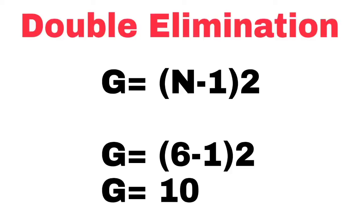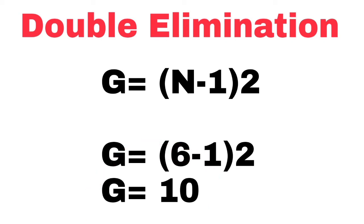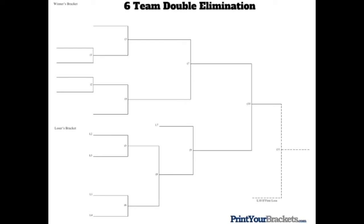The formula for double elimination is G = (N minus 1) times 2. To understand it more easily, I will use 6 teams. Substituting: G = (6 minus 1) times 2, so 5 times 2 equals 10. We have 10 games to be played. Now let's elaborate further on the double elimination tournament using a diagram.